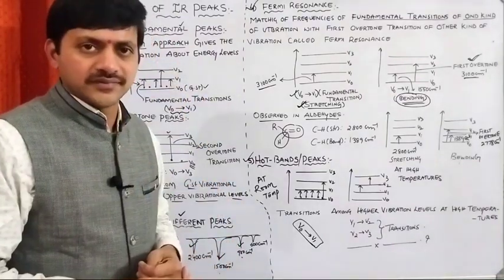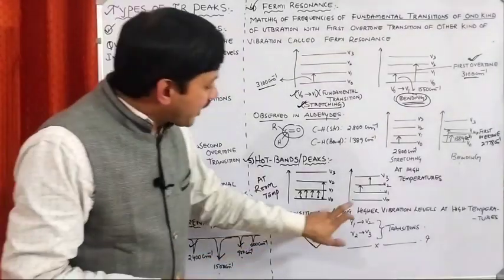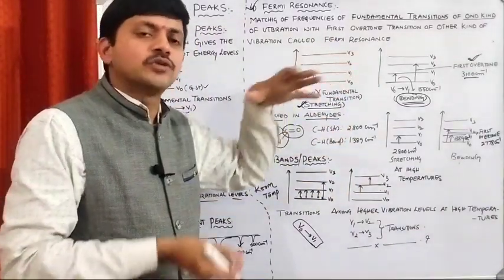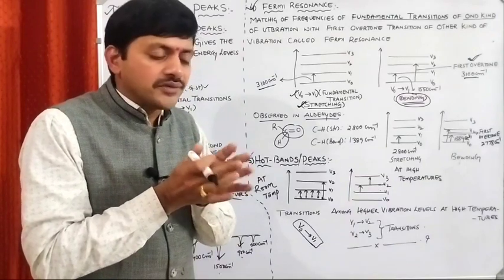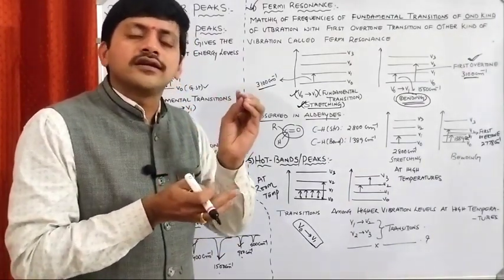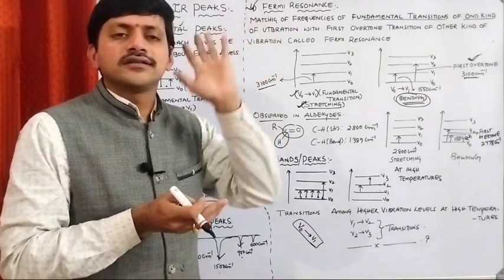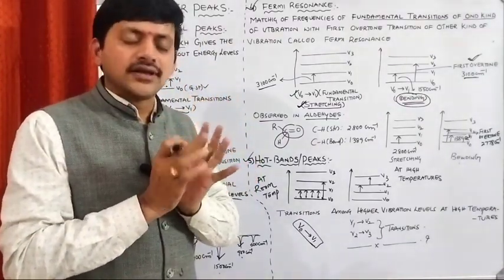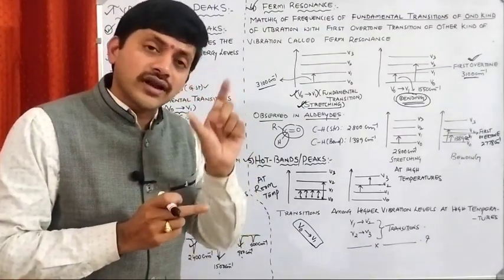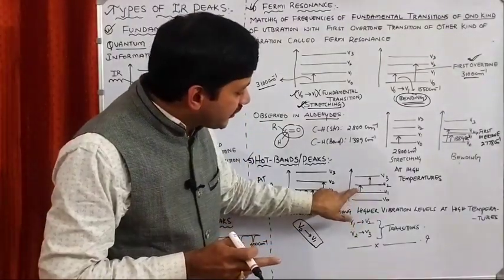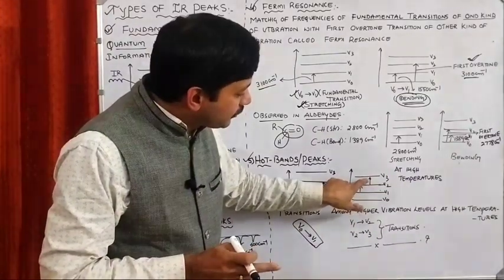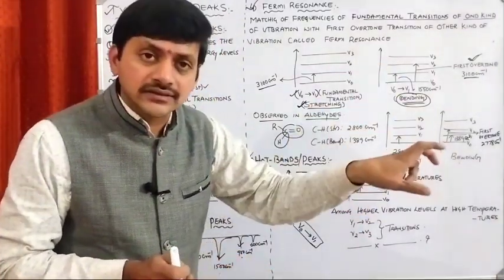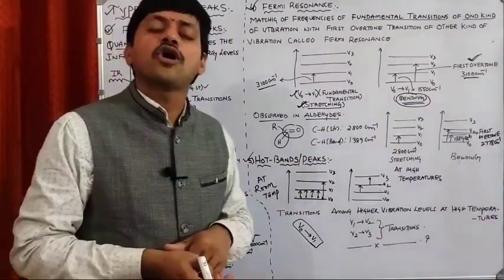Suppose we change the temperature. By increasing the temperature, some particles from the V0 level shift to higher energy levels. For example, assume 10 particles are at V0; upon changing the temperature, two particles jump to V1 and two particles jump to V2. When that system is irradiated with IR radiation, particles present in the V1 and V2 levels undergo transitions. The peaks resulting from these higher-level transitions are called hot bands or hot peaks.